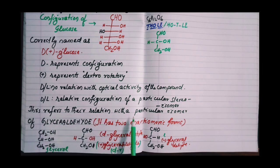This refers to the relation with a particular isomer of glyceraldehyde. You know glyceraldehyde is CHO, HCOH, CH2OH. This is glycerol CH2OH-CHOH-CH2OH. This CH2OH is converted to CHO. This is glycerol and this is glyceraldehyde. And this is D-glyceraldehyde because the OH is on the right side of the middle carbon.